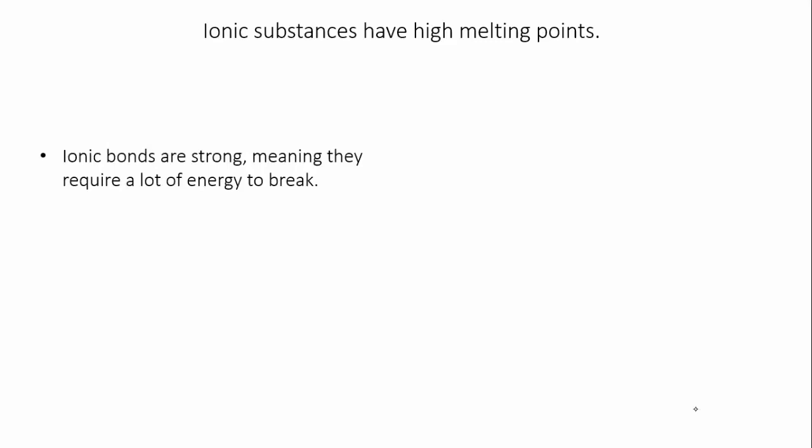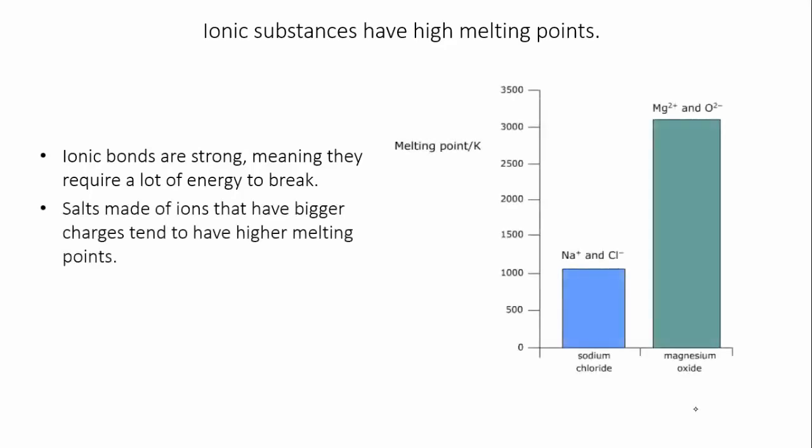What's more, salts that are made of ions with higher charges tend to have higher melting points. So as you can see in this graph here, the melting point of sodium chloride, which is made up of sodium and chloride with single charges, is much lower than the melting point of magnesium oxide where the ions have 2 plus and 2 minus charges.